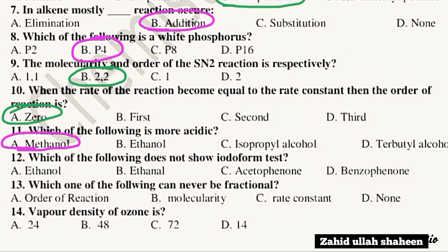Question 12: Which of the following does not show the iodoform test? The answer is benzophenone — option D.